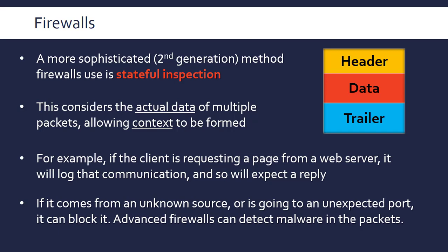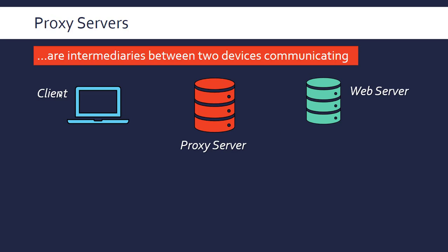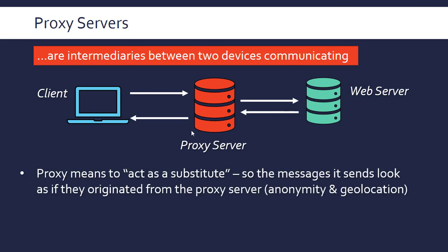A related term is the proxy server, which is an intermediate device between two communicating devices. All messages between a client and a web server go via the proxy server. If a client requests a web page, it goes to the proxy server first, which then relays the message to the web server — and by relay I mean it creates a new message in its own name, asking for the same thing the client did. Proxy means to act as a substitute, and that's exactly what it's doing.